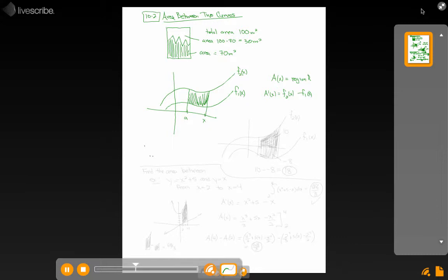And it actually also works even if one of them is above like this, and the other one is below like this. And if I call them f2 of x and f1 of x again, some people get worried when one of the functions goes below the axis there. But if I call this a and x again, the area between them is still going to be f2 minus f1 and then find the antiderivative.